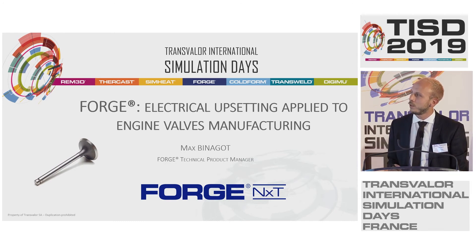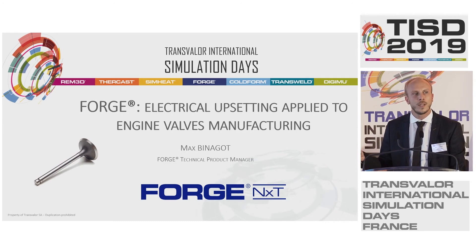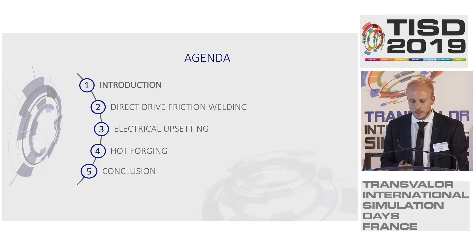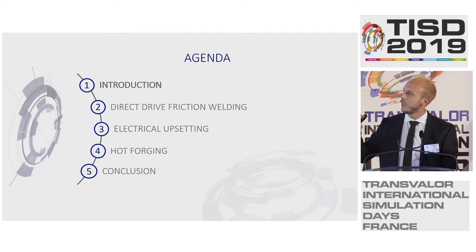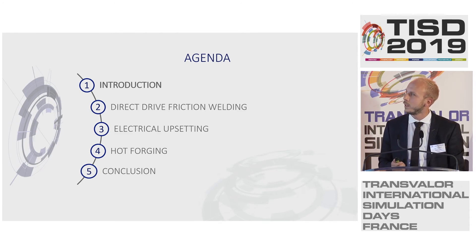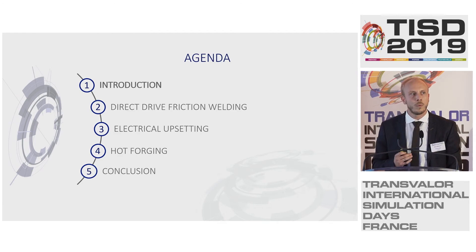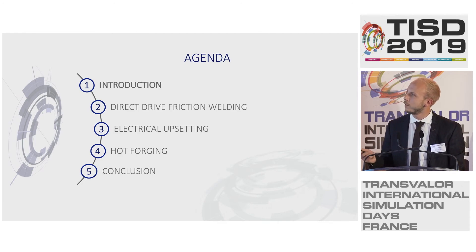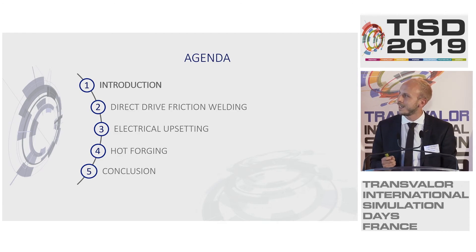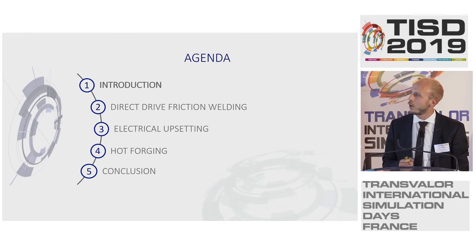And especially for this example, the engine valves that equip the engine of our vehicles. We will focus on three main stages of the manufacturing process: three forming operations — the friction welding, the electrical upsetting, and the hot forging step.